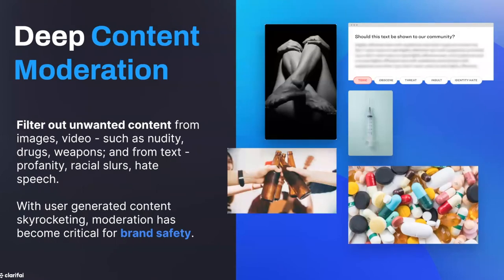The next example is deep content moderation. Here you're able to use AI models to moderate user-generated content — images, video, and even text. The idea is to filter out unwanted content from images such as nudity, drugs, and weapons, and from text you may want to flag profanity, racial slurs, and hate speech. This capability is important because with the amount of user-generated content skyrocketing, moderation has become a must-have for brand safety — companies do not want to associate their brand with negative content.